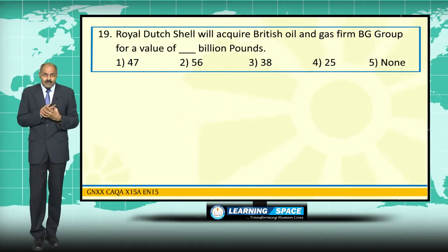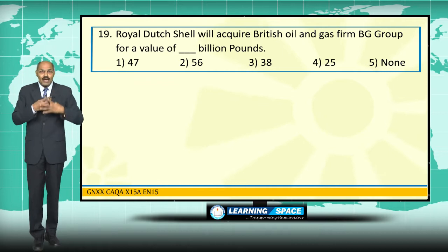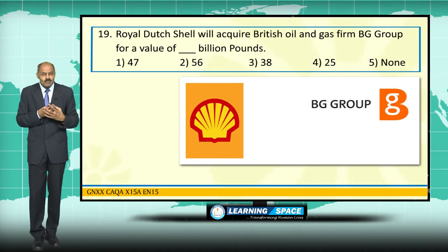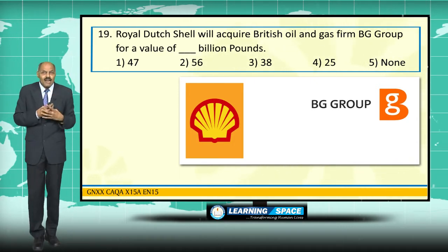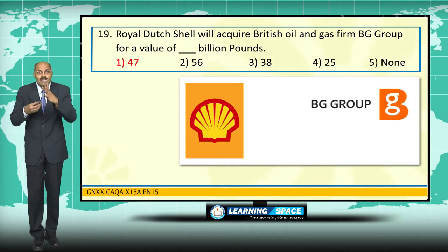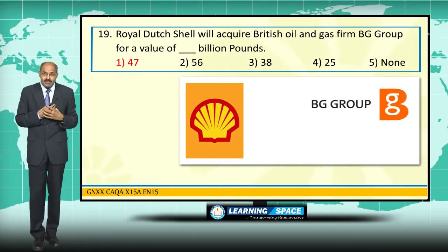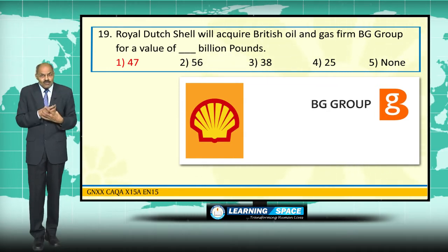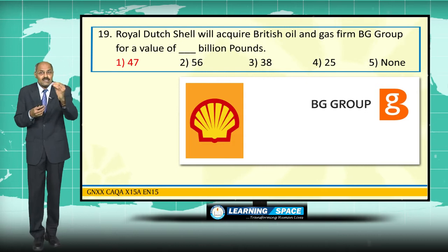Royal Dutch Shell, the oil company based in The Hague, Netherlands, recently announced it will acquire British oil and gas firm BG Group, headquartered in the United Kingdom, for a value of 47 billion pounds.